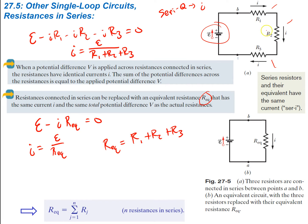So we took the circuit with multiple resistors and simplified it to one equivalent resistance with the same current going across it. The equivalent resistance is just the sum of all your resistances added together — all N resistances. That's it for this lecture. We'll pick it up next time.